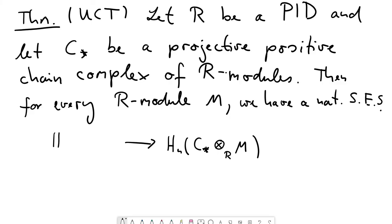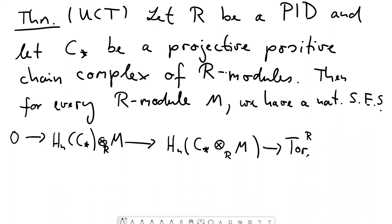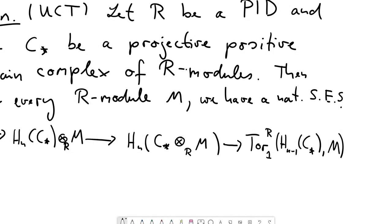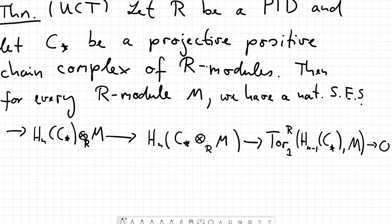What goes in the middle is the nth homology of the tensor product C* ⊗ M. A first naive guess might be that taking tensor products and taking homology commute — that this should equal the homology of the original chain complex C* tensored with M. It turns out that sometimes this isomorphism holds, but in general not. In general, the statement is we only have an inclusion, and the cokernel is given by the Tor functor — Tor_1^R of the (n−1)st homology of C* with M. The short exact sequence ends with zero.